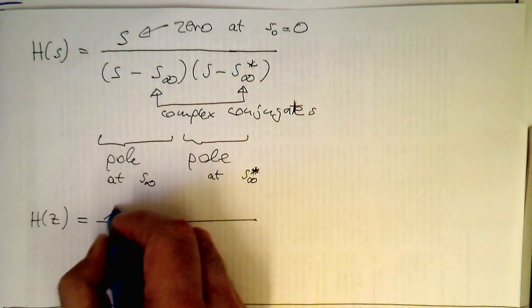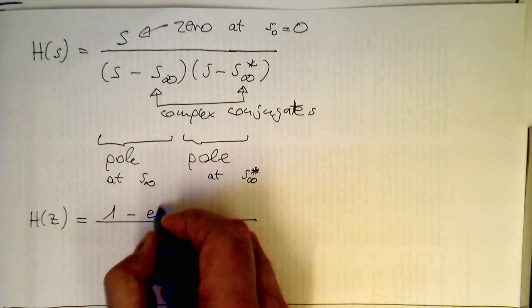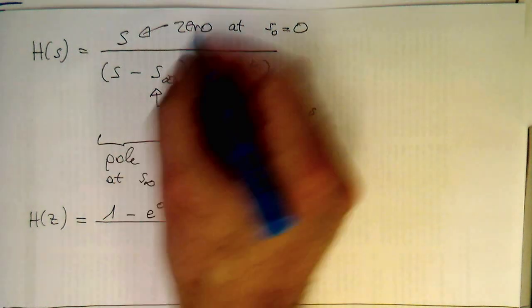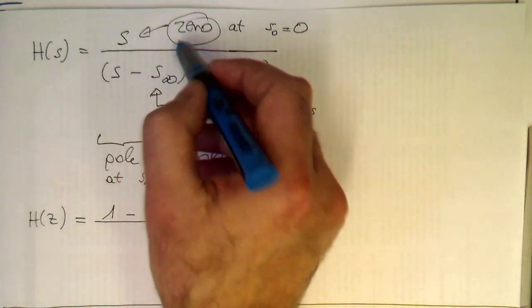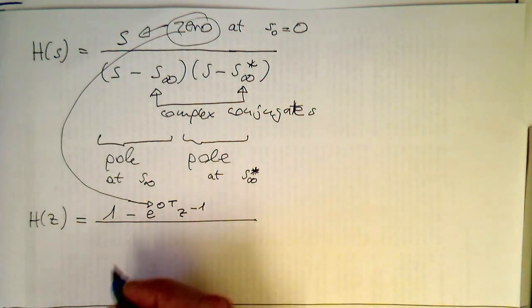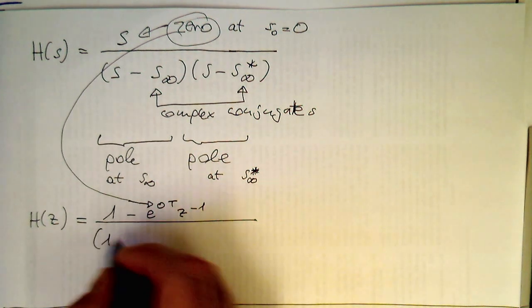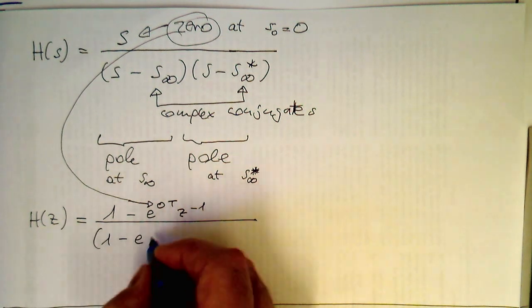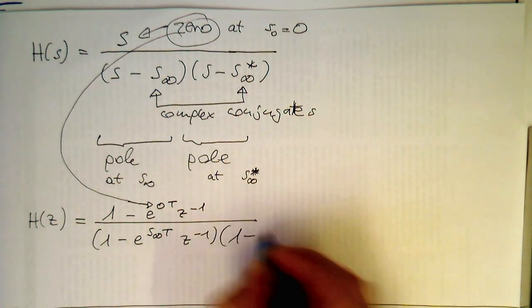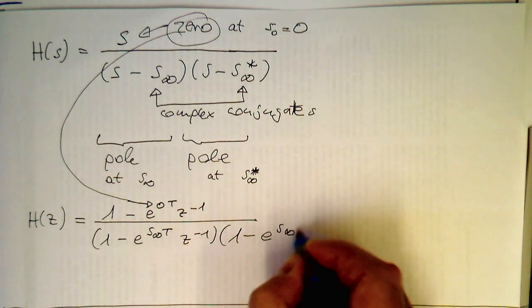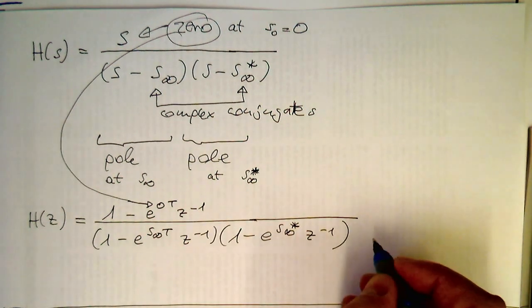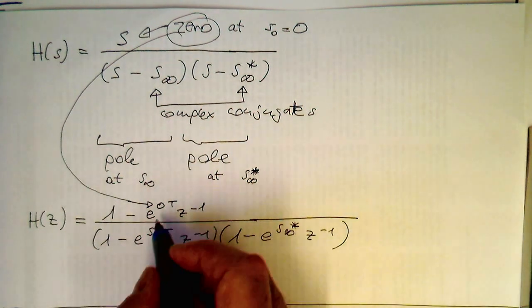The zero here is: one minus e^(S_zero · T) · Z^(−1). That's our zero term. At the bottom, we do what we've done before: one minus e^(S_∞ · T) · Z^(−1), multiplied by one minus e^(S_∞* · T) · Z^(−1). We see already that the numerator is simply one times that zero factor.